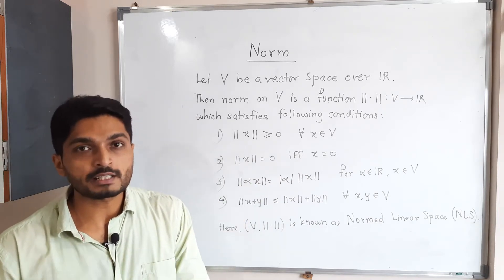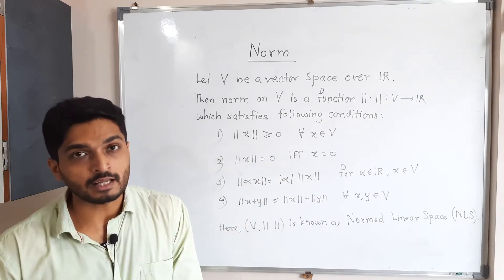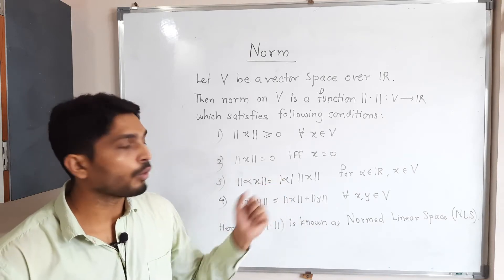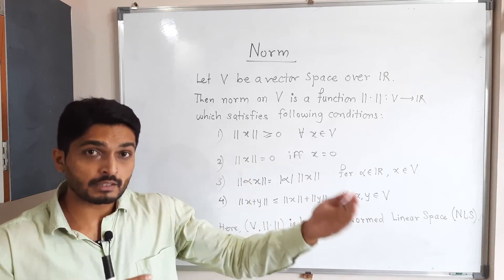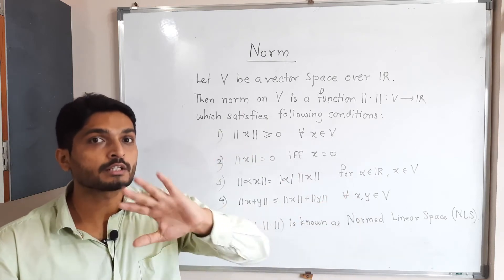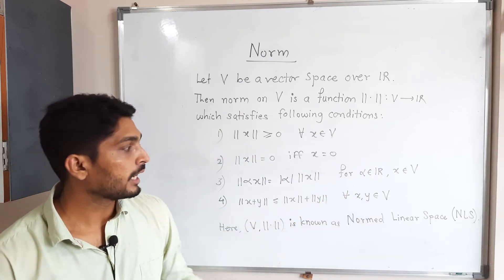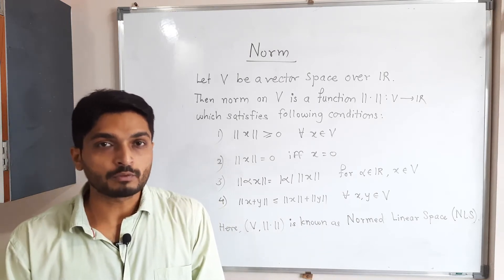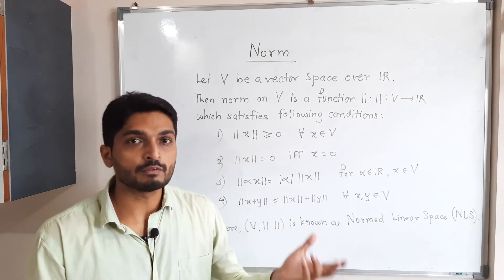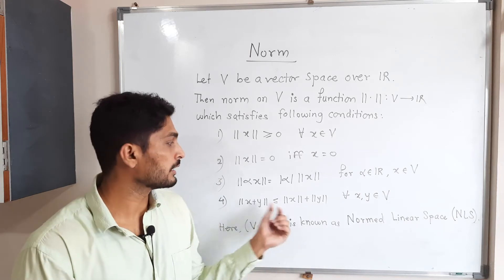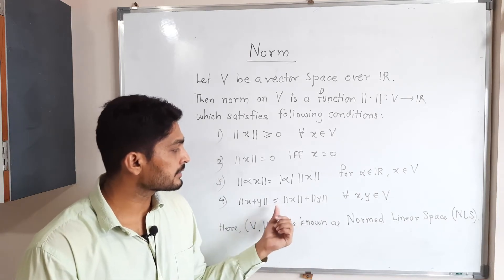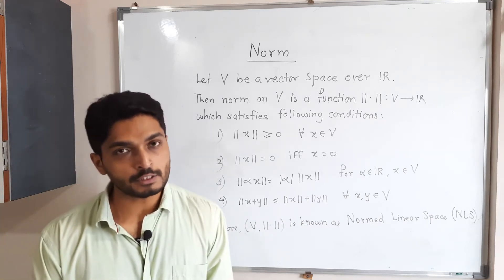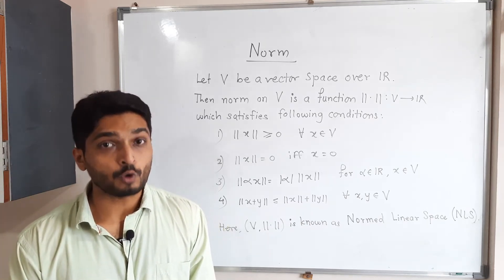Third condition: if there is any scalar inside the norm, you can take it outside, but you have to take it with modulus. That means if you have any negative number inside it, if you take it outside, you will have a positive number. The last condition: if you take separate norms when there is addition, the value will get increased — the right-hand side is greater than or equal to the left.